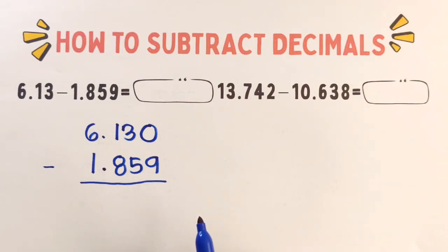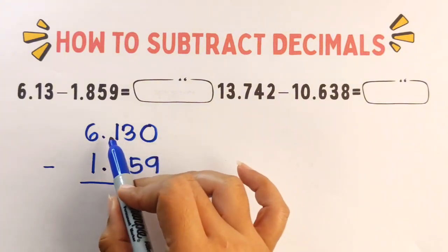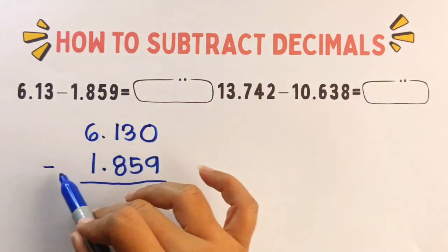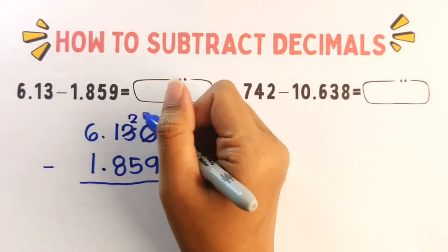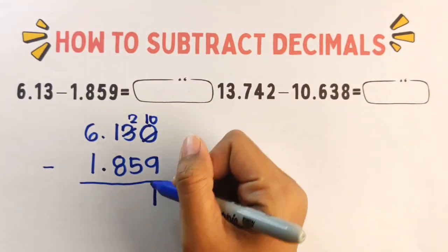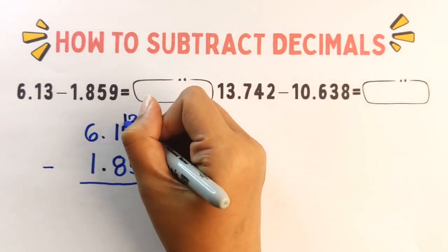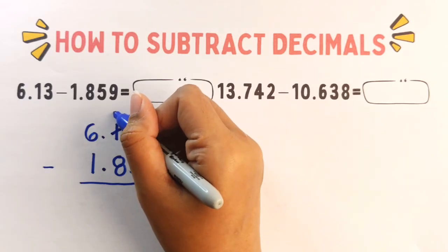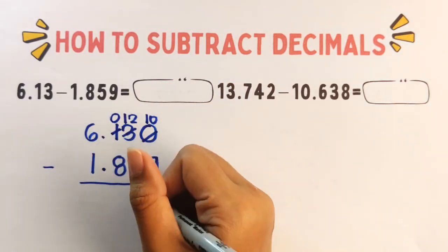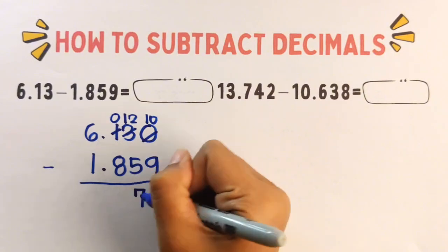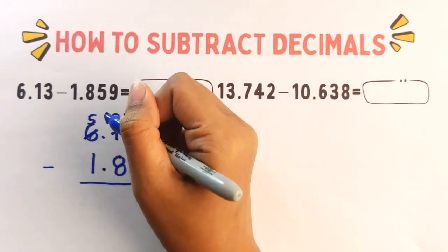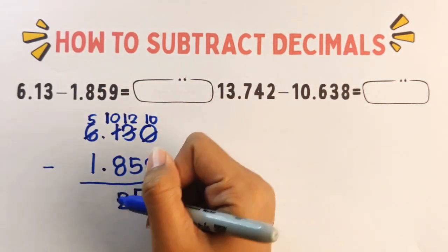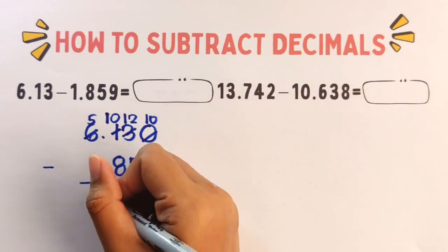Step number two, subtract carefully, borrowing as needed. So we have 10 hundred and thousand. So 0 minus 9 cannot be. We need to borrow. It will be 2. 10 minus 9. The answer is 1. 2 minus 5 cannot be. Then we need to borrow. Again. It will be 12 minus 5. The answer is 7. 0 minus 8 cannot be. Borrow again. 10 minus 8. The answer is 2. And 5 minus 1. The answer is 4.